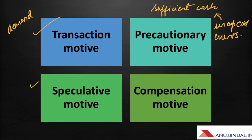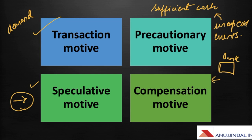The third is the speculative motive: cash may be held to take advantage of potential profit-making situations. For example, a firm might have an opportunity to purchase raw materials at a heavy discount if paid in cash. The fourth is the compensation motive — if a firm opens a current account with a bank, a minimum balance must be maintained, ranging from Rs. 5,000 to Rs. 10,000, which acts as a permanent balance and provides the compensation motive for holding cash.